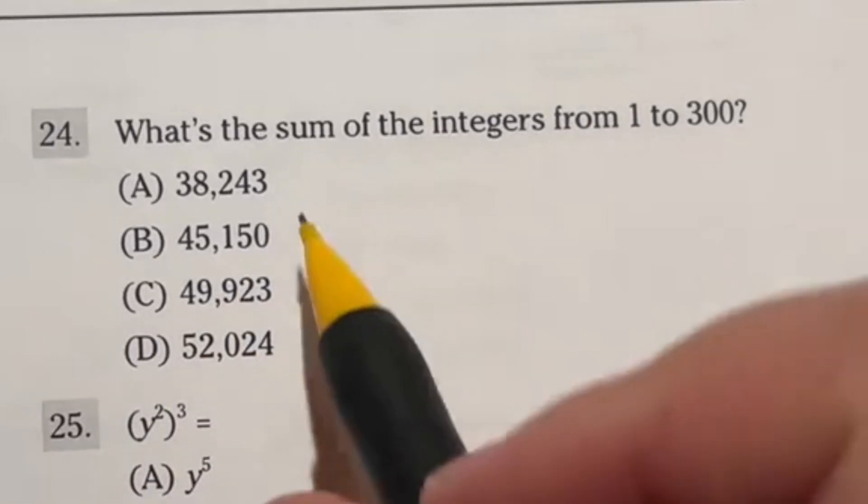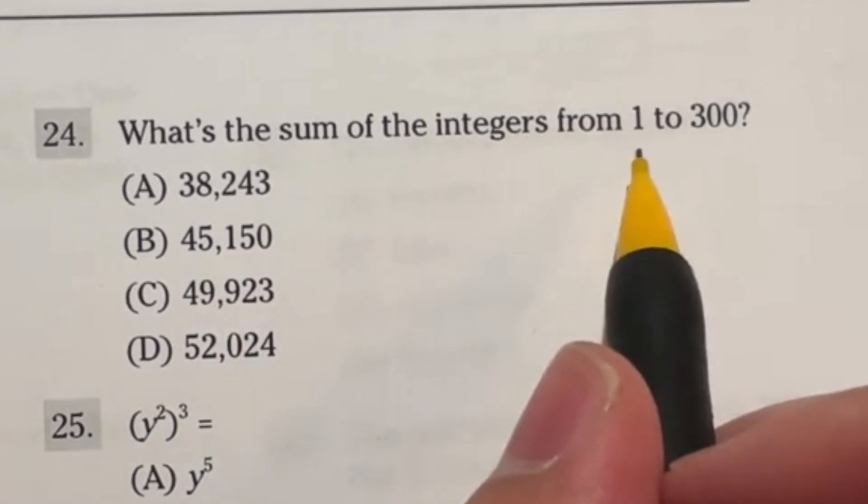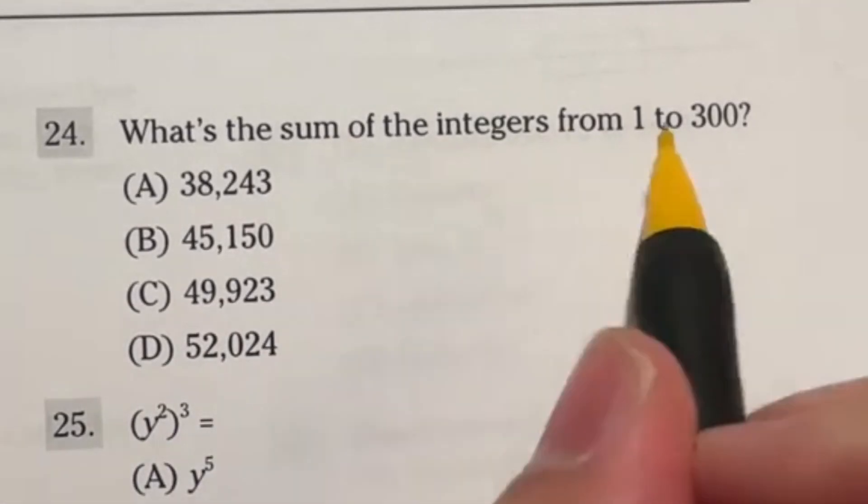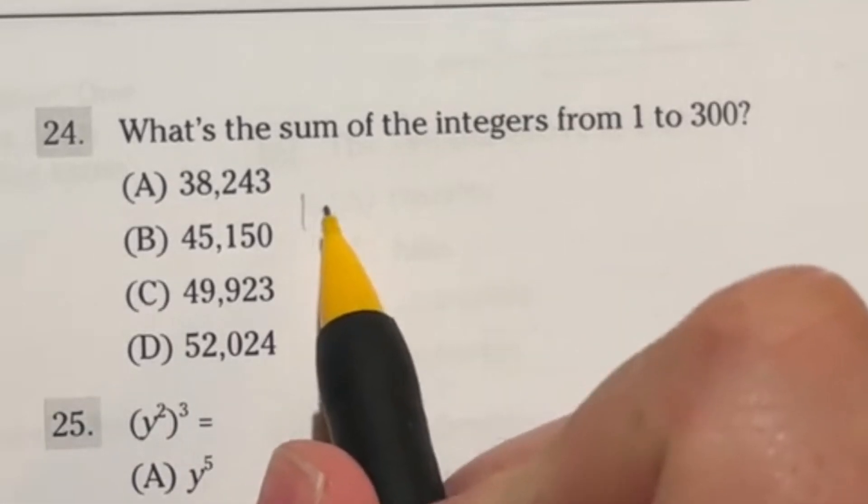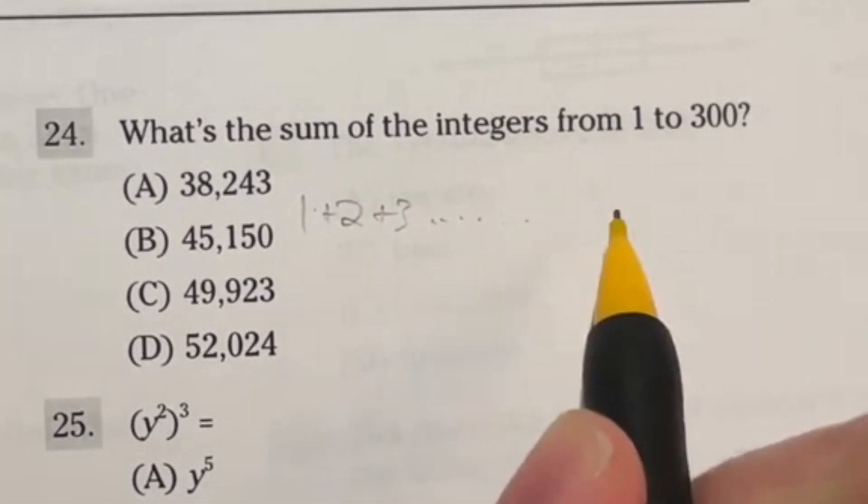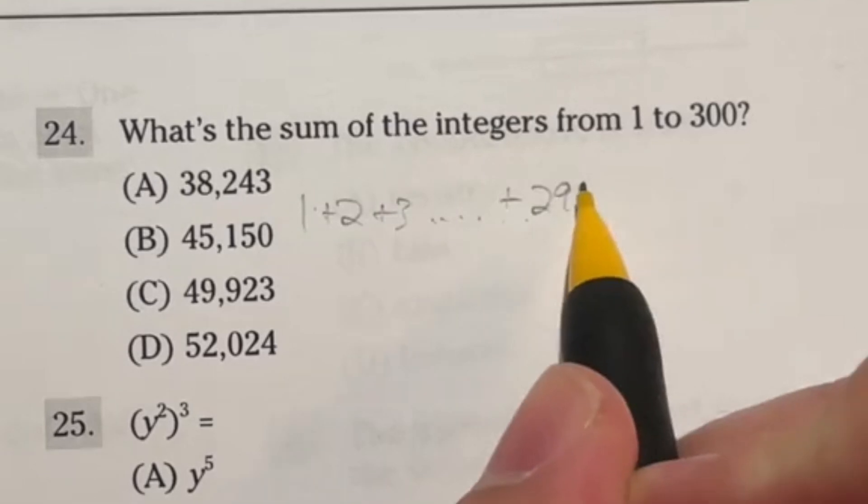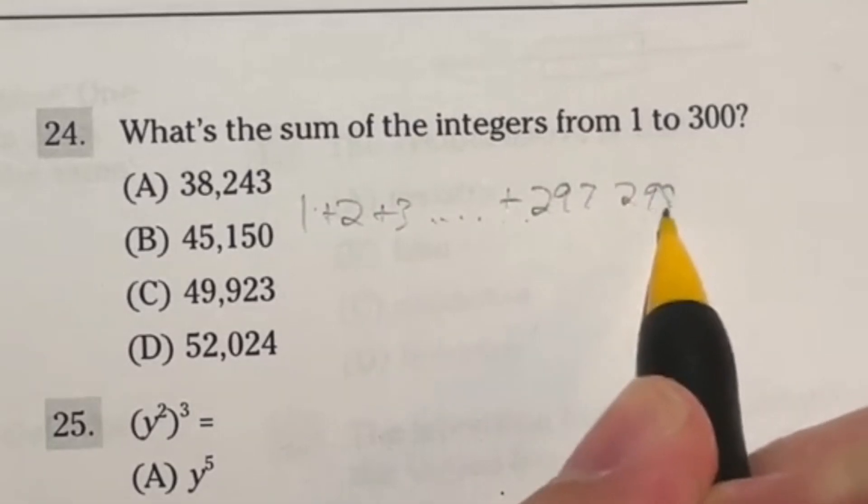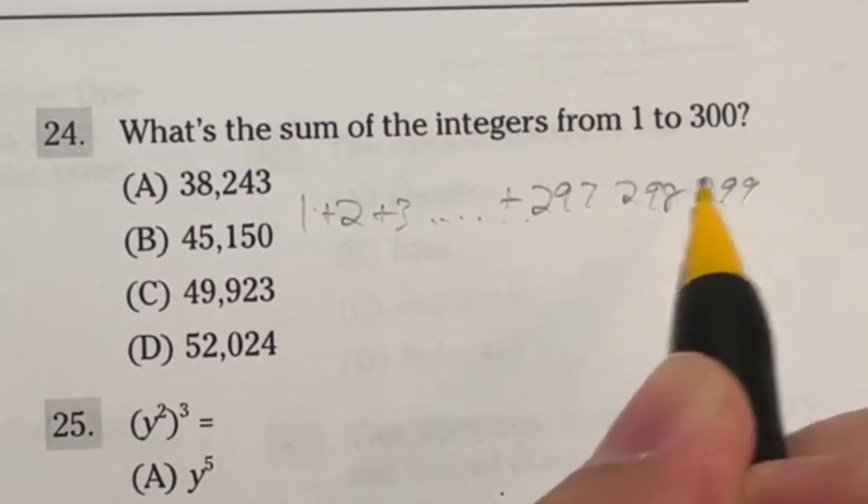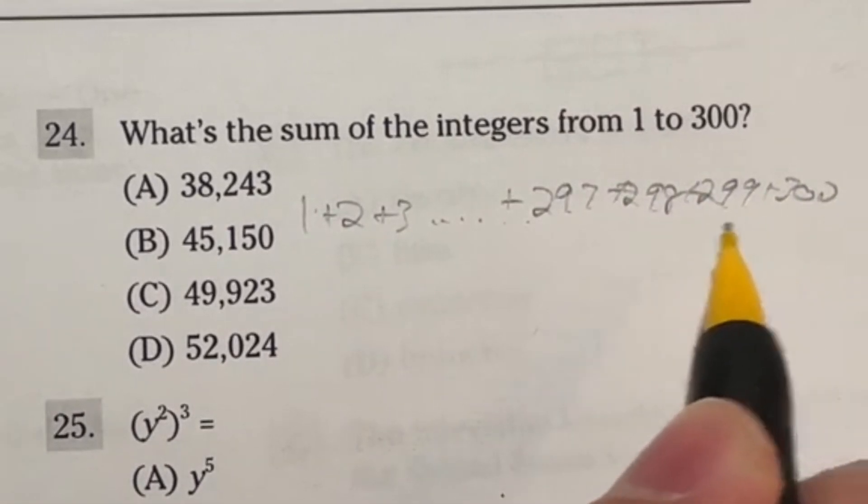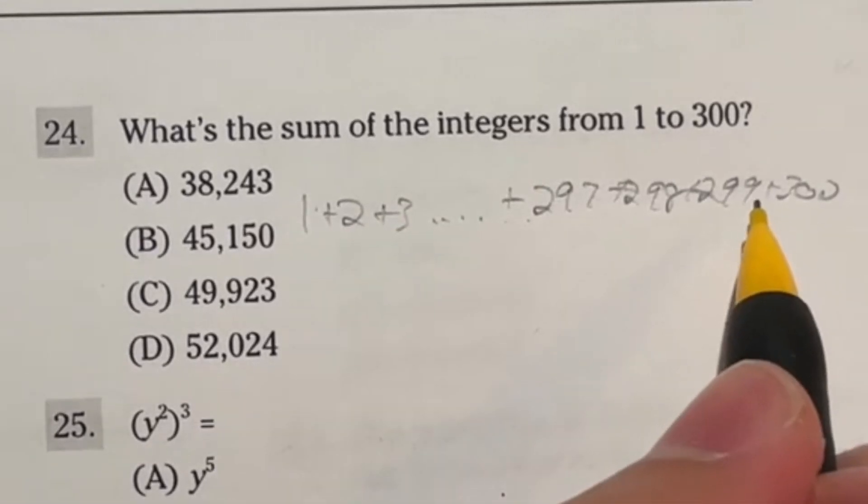Number 24 is actually pretty crazy here. It says the sum of integers from one to 300. So that means they literally want you to add up all the numbers from one to 300. So like one plus two plus three, all the way up to like, plus I don't know, 297, 298, 299 and 300. And you're just adding all those up. Obviously, you don't have the time to actually add all these up.